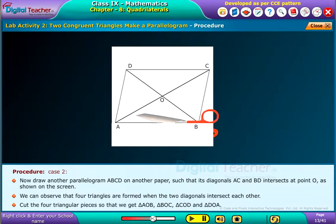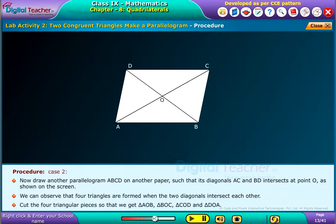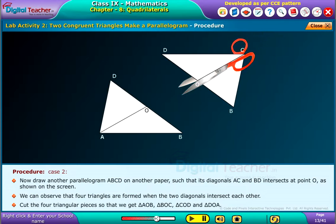Cut the four triangular pieces so that we get triangle AOB, triangle BOC, triangle COD, and triangle DOA.